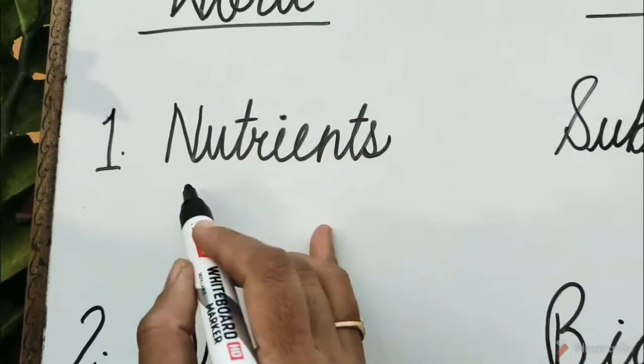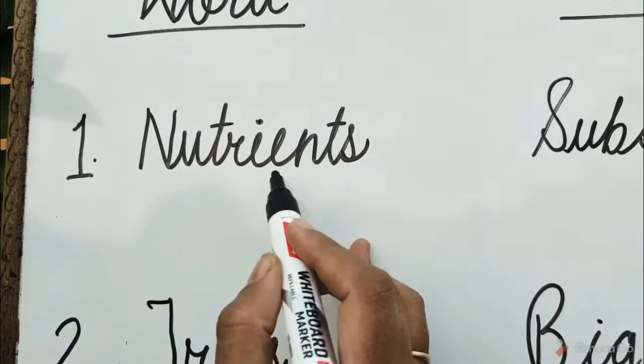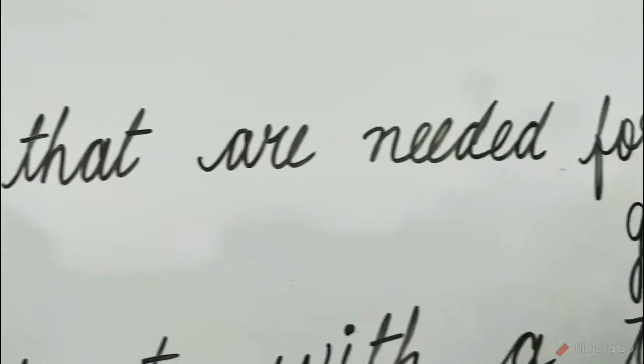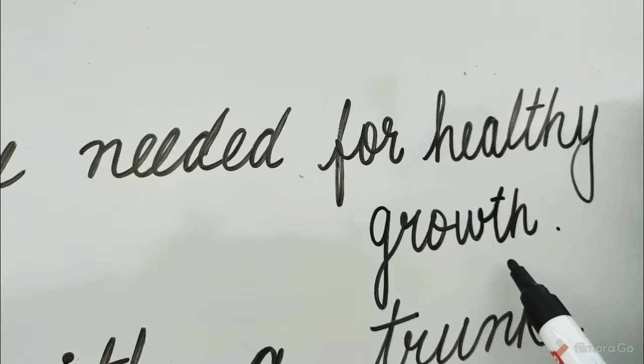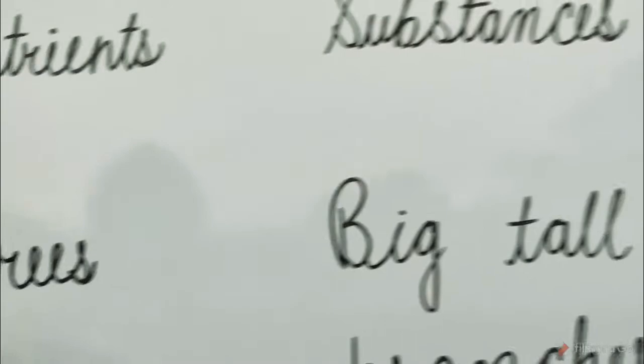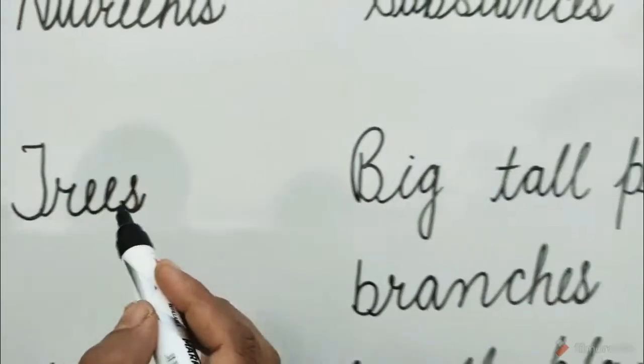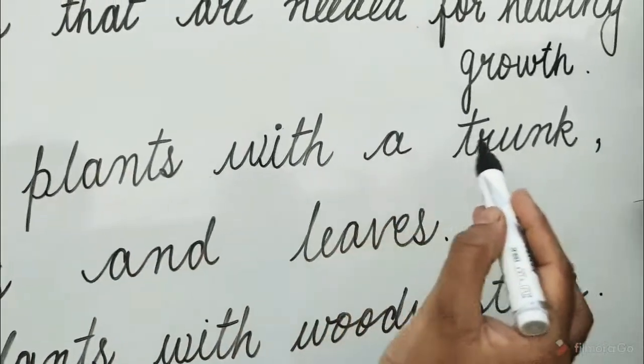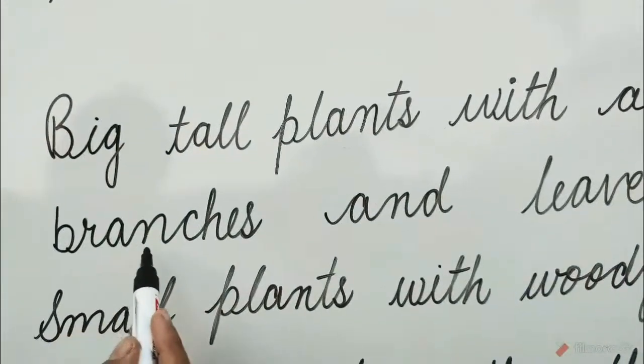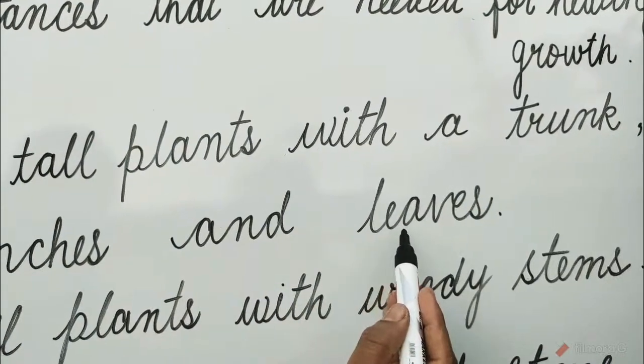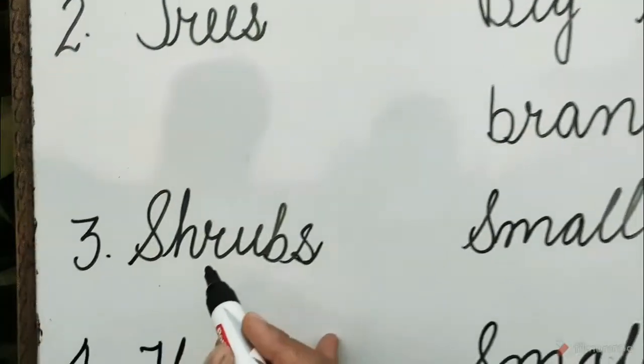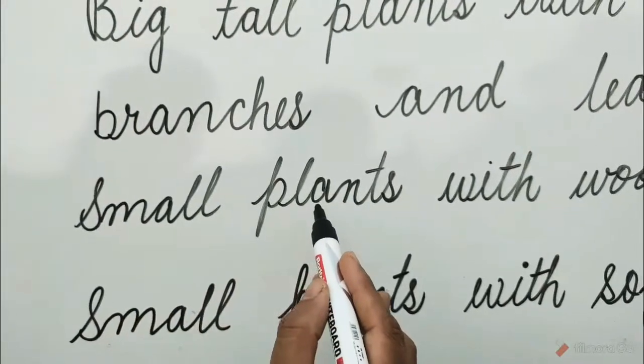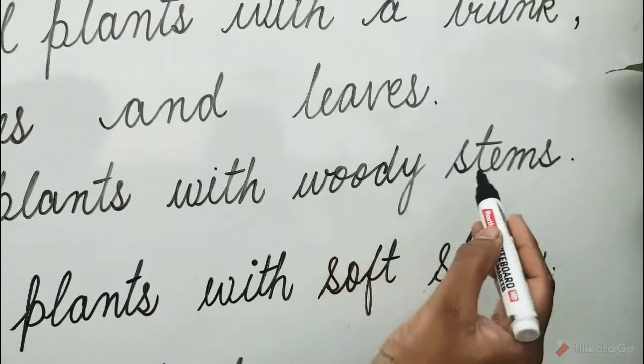Number 1: Nutrients means substances that are needed for healthy growth. Number 3: Trees means big tall plants with a trunk, branches and leaves. Number 3: Shrubs means small plants with woody stems.